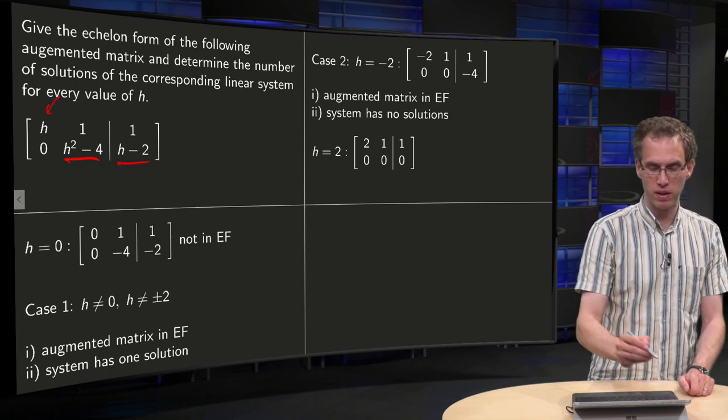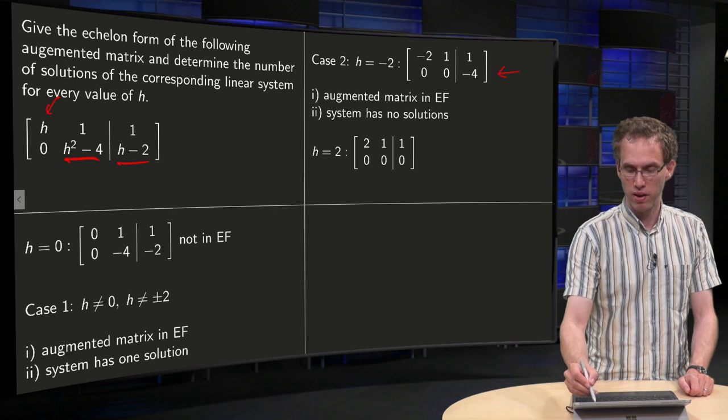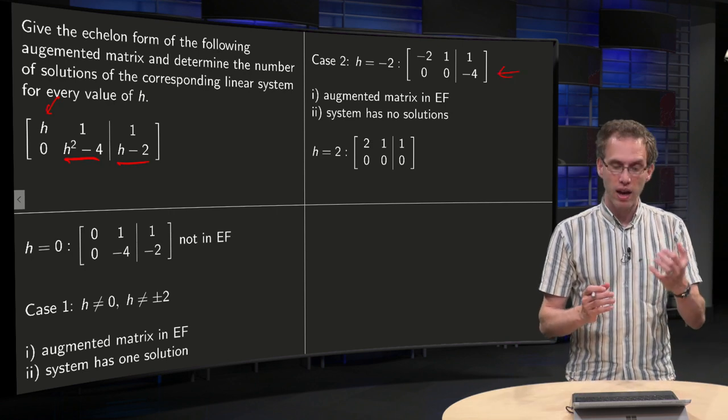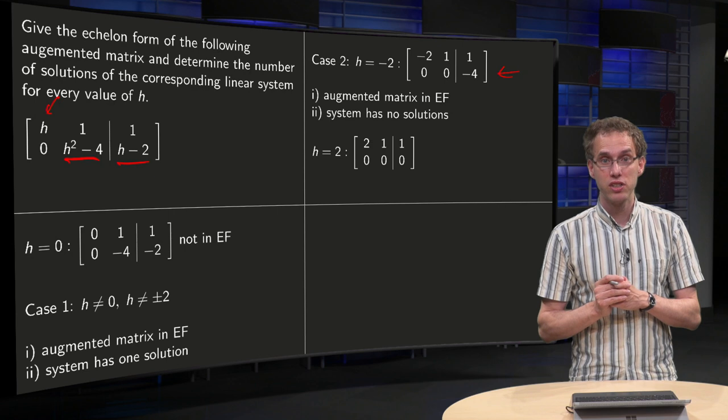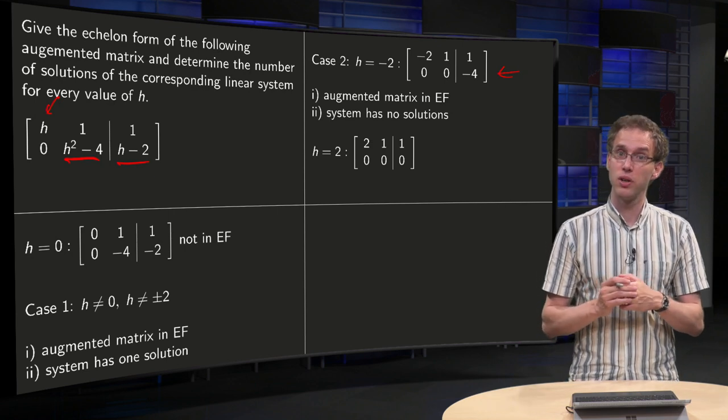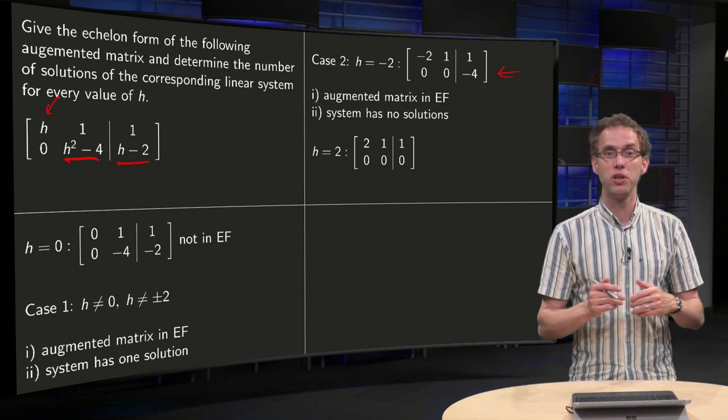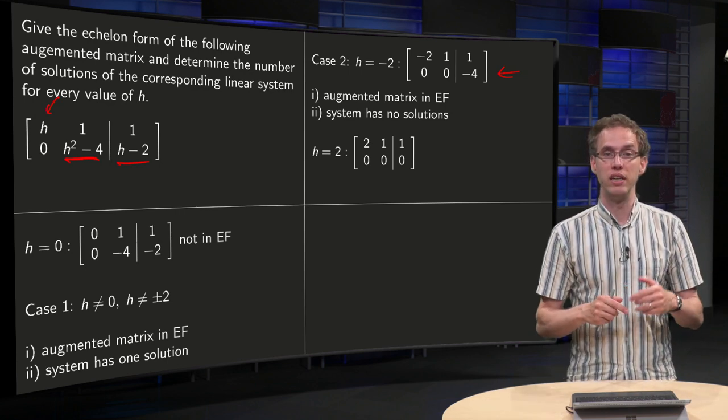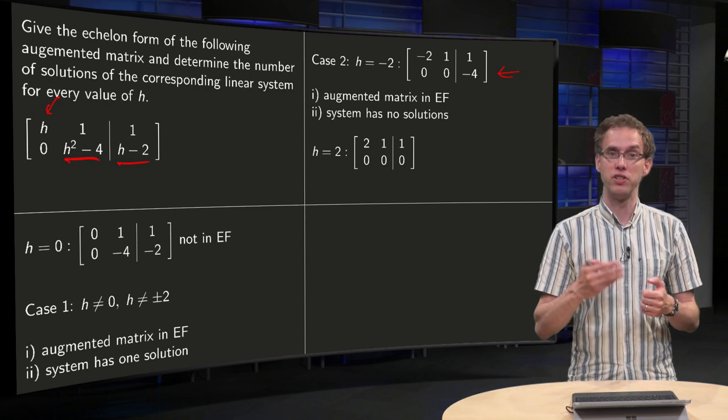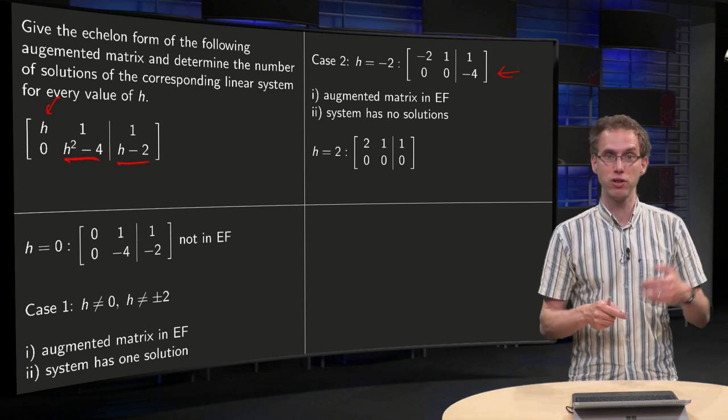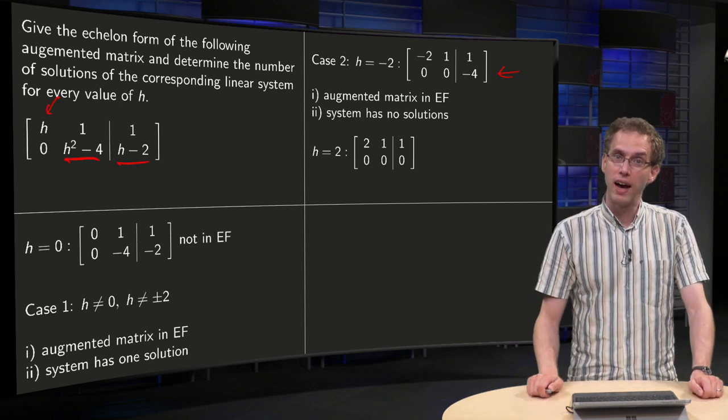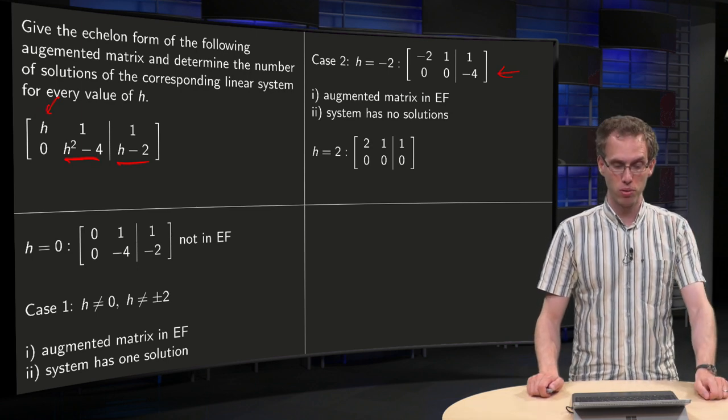So here we have our augmented matrix. We see that it is already in echelon form, what about the number of solutions? Well we see the second row yields zero times x1 plus zero times x2 equals minus four, so zero equals minus four, an inconsistent equation so we have no solutions.